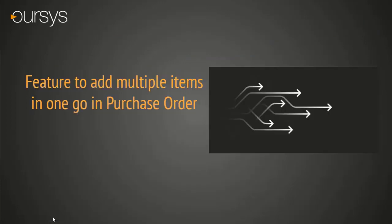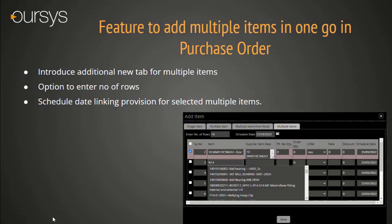Feature to add multiple items in one go in Purchase Order level. At the Purchase Order level, we have added a new tab for multiple items. Here, the user can add multiple items with different item codes in a single click. It helps the user to save time in daily routine. Pair quantity control has also been introduced in this tab.